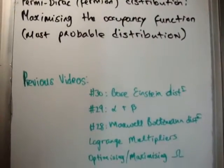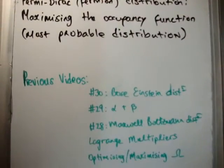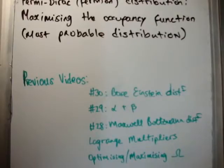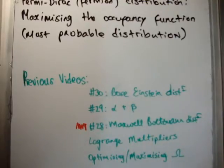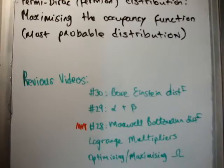The previous videos to this are number 30, where I worked out the Bose-Einstein distribution function; number 29, where I showed what the values for alpha and beta are; and number 28, where I did the Maxwell-Boltzmann distribution. This is the most detailed of the lot, so I suggest going back to those if you don't understand what I'm doing in this video. I've also done others on Lagrange multipliers and optimizing or maximizing the multiplicity.